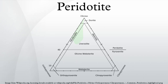Peridotite is a dense, coarse-grained igneous rock, consisting mostly of the minerals olivine and pyroxene. Peridotite is ultramafic, as the rock contains less than 45% silica. It is high in magnesium, reflecting the high proportions of magnesium-rich olivine, with appreciable iron.